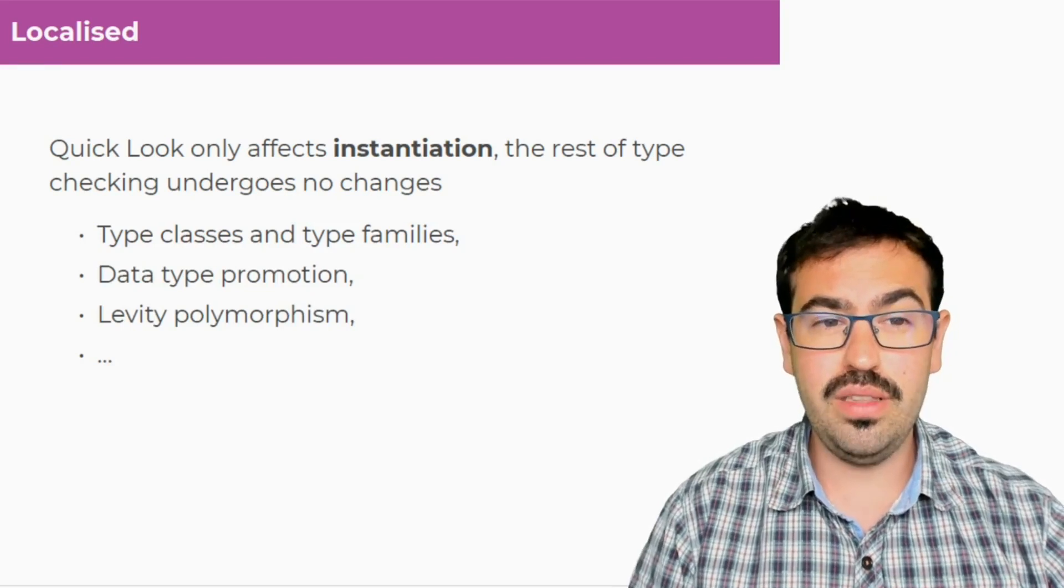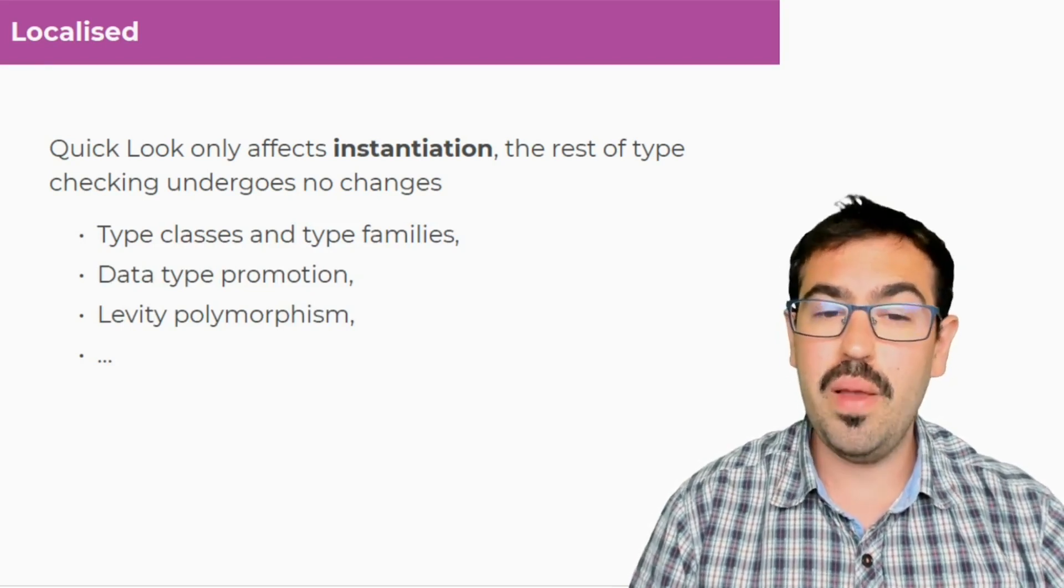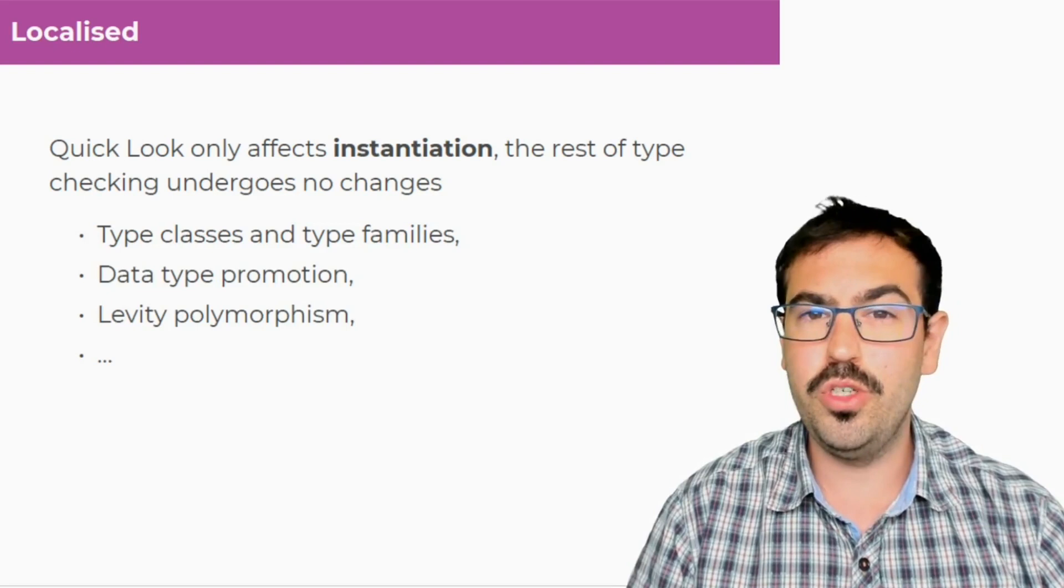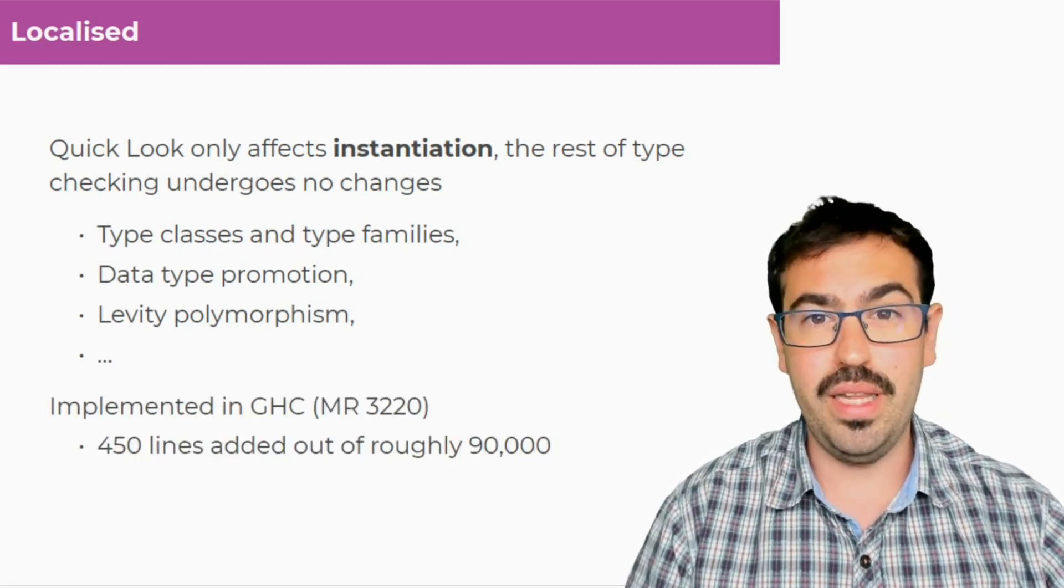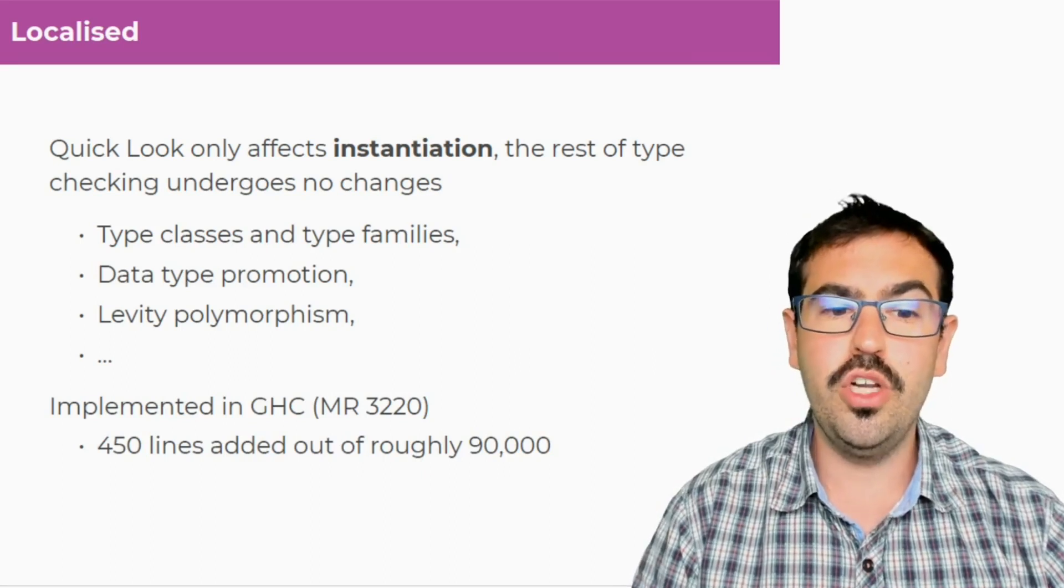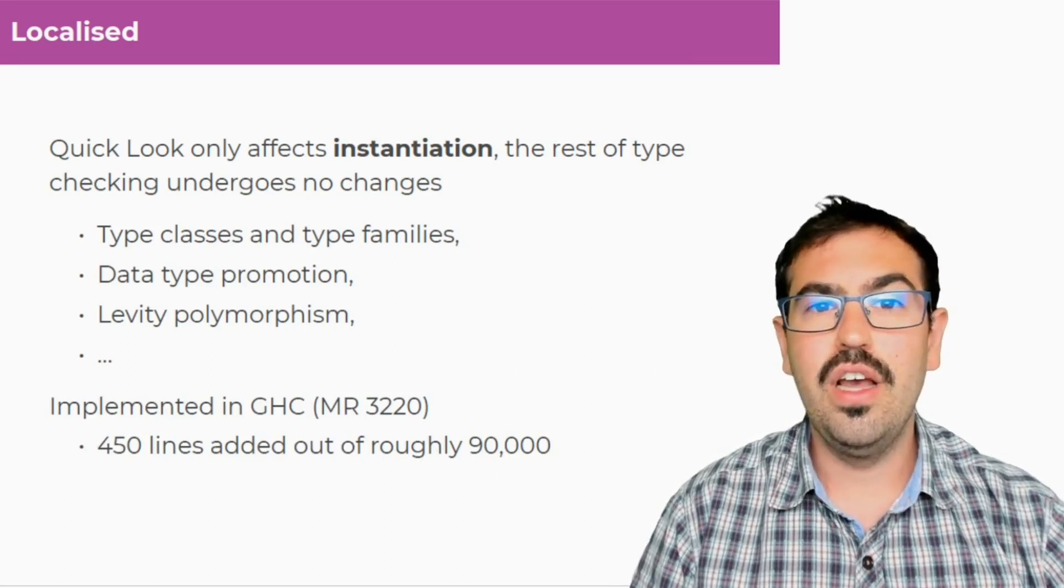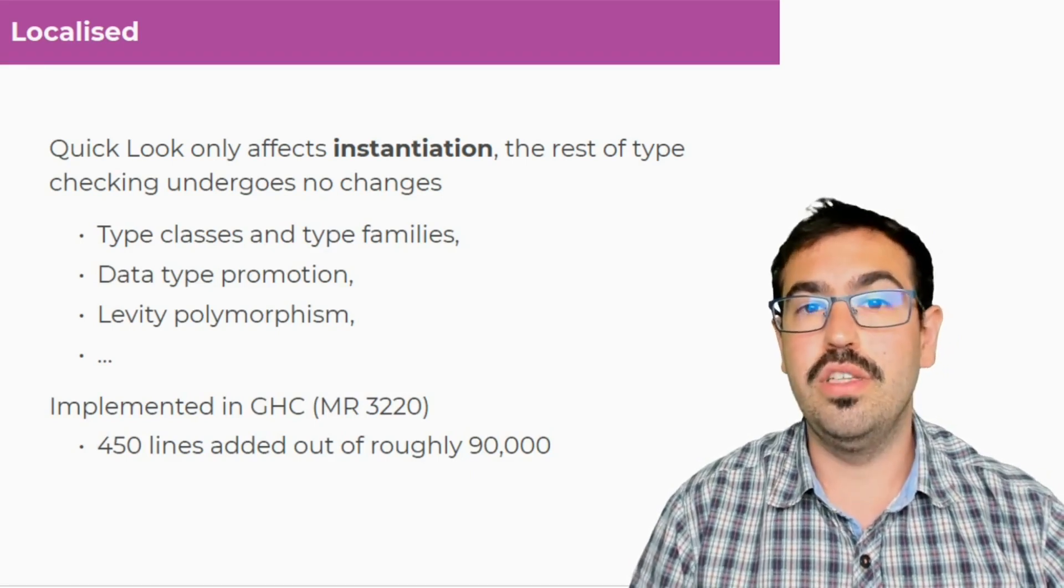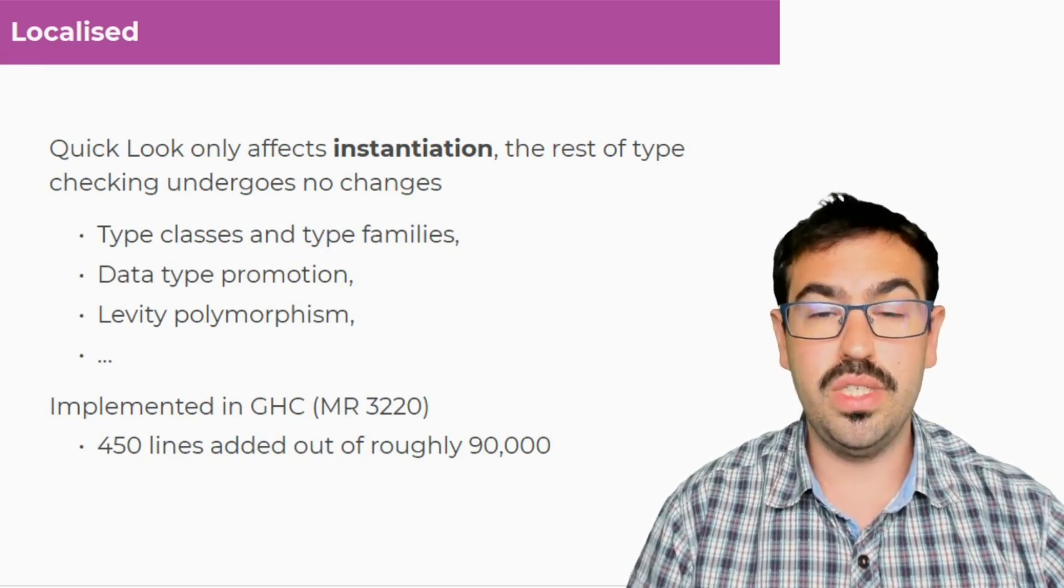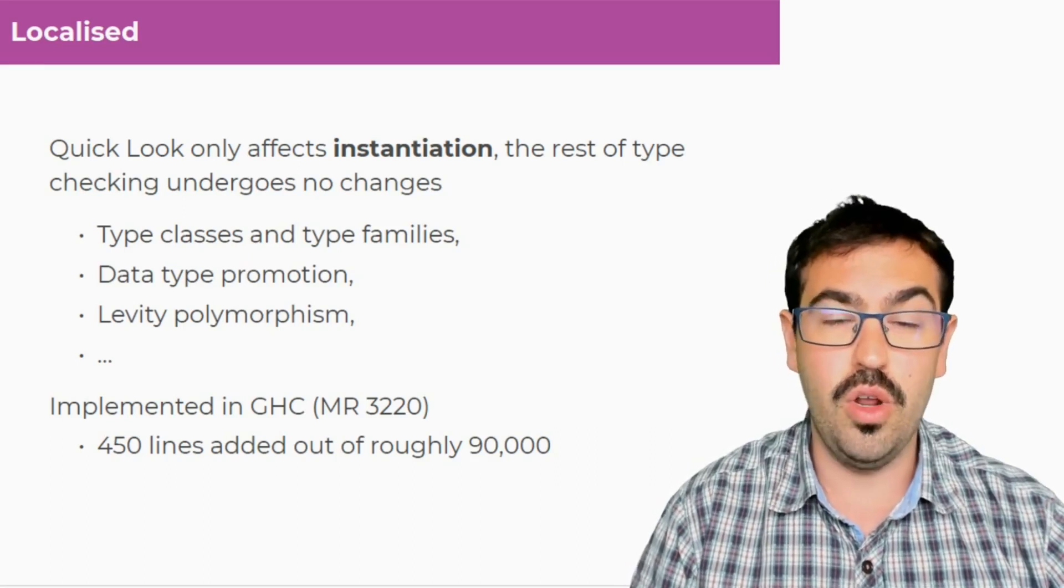So let me talk a bit more about the fact that QuickLook is very localized. As I said, this only affects instantiation. The rest of the type checking has no changes. So we've integrated this into GHC, which has type classes, type families, data type promotion, levity polymorphism, you name it. And we were able to implement this, and there is a merge request for doing so. And we only had to add 450 lines out of roughly 90,000 lines which make up the type checker in GHC. So I think we succeeded in making this thing really localized.